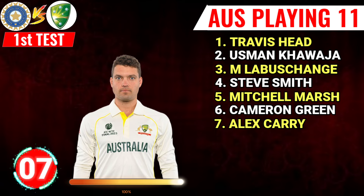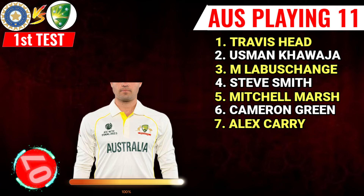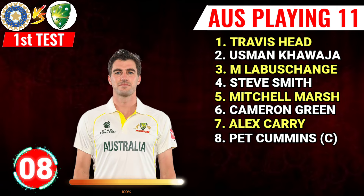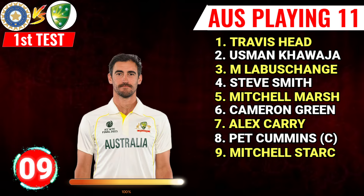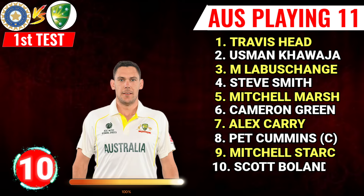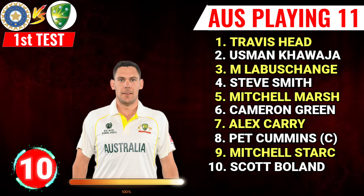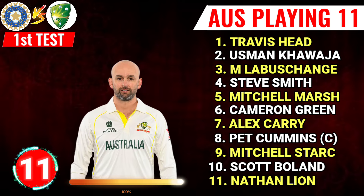Number 5: Cameron Green, right hand all-rounder. Number 7: Alex Carey, left hand batter. Number 8: Pat Cummins, right hand fast bowler and captain. Number 9: Mitchell Stark, left hand fast bowler. Number 10: Scott Boland, right hand fast bowler. Number 11: Nathan Lyon, right hand all-rounder.